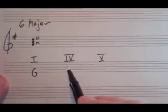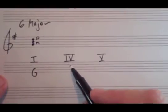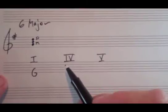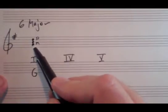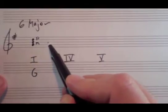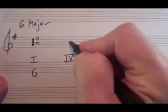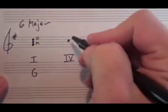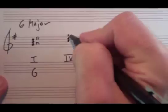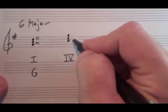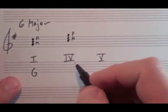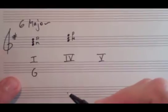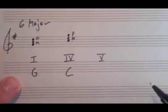So the second triad we need to figure out is the IV. The IV is built on the fourth degree of the G major scale, so we can count up lines and spaces. We already have the key signature, so we can just go up the scale. G is 1, A is 2, B is 3, and C is 4. So we'll build a triad on top of C. We can analyze it: C to E, major third, C to G, perfect fifth. But we know that because the primary triad in major is major, this is going to be a C major triad.